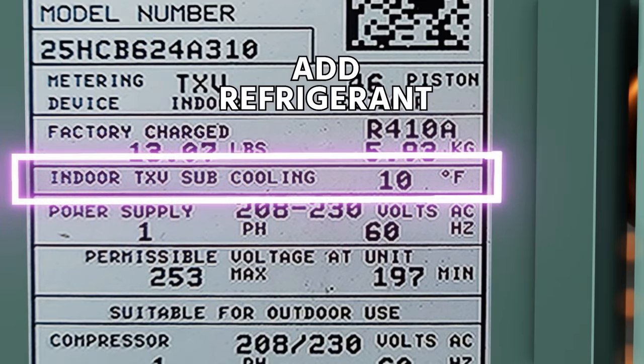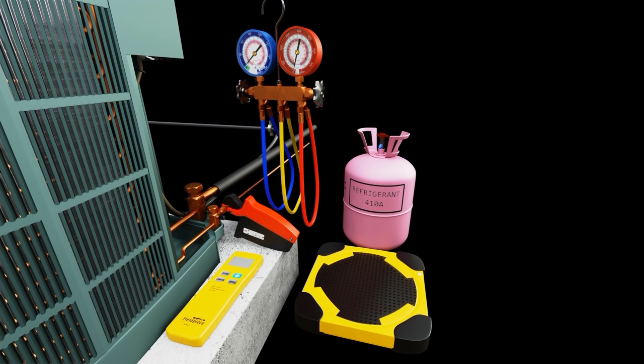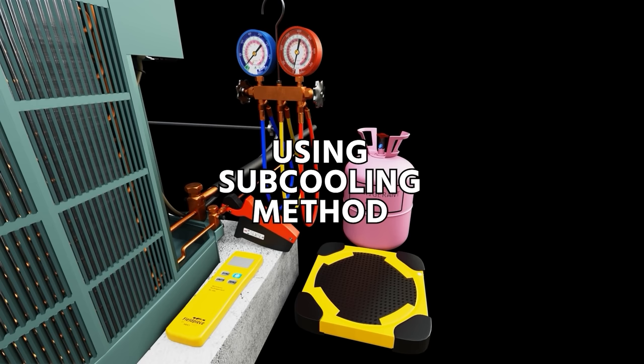If the number is too low, we add refrigerant in order to hit our target while monitoring all of our other readings and measurements on our system. We're going to show some future videos of how to do it with probes and digital manifolds similar to what we've done before. We're also going to show superheat and other diagnostics. This is a basic look at charging an air conditioning or heat pump system with refrigerant using the subcooling method. Hopefully you found that helpful.